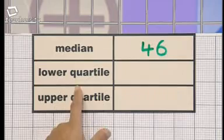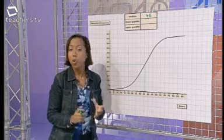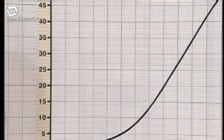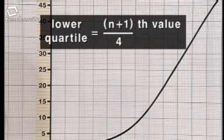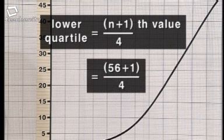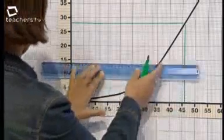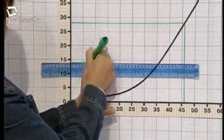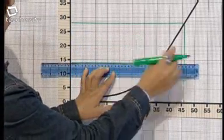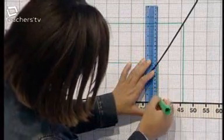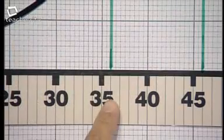Next, the lower quartile. This is the value which is one quarter of the way into the data. To find the exact position of the lower quartile, you can use this formula. 56 plus 1, 57, divided by 4, is 14.25. Again, you might decide that it's sensible to approximate. Drop the plus 1, and simply divide 56 by 4, which gives 14. To find the lower quartile, travel across from 14 until you reach the curve, and then down to the horizontal axis, the lower quartile is 36.